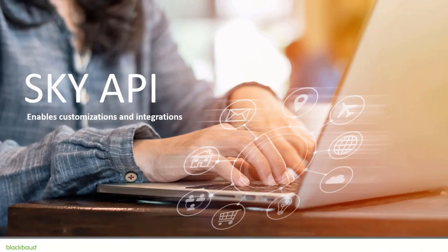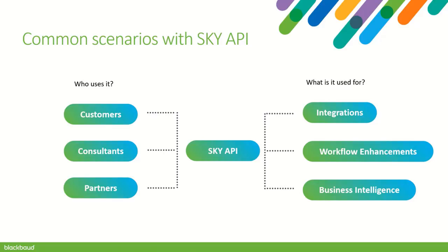That brings us to examples of Sky Developer in use, starting with Sky API. The most common use case for Sky API is to create integrations to make Blackboard solutions work well with other systems — whether that's keeping records in sync between two systems or having one system trigger an action in another. Sky API can also be used to automate repetitive or tedious workflows, and we also have a lot of people using Sky API to power their business intelligence, gathering data across many different systems to produce roll-up reports.